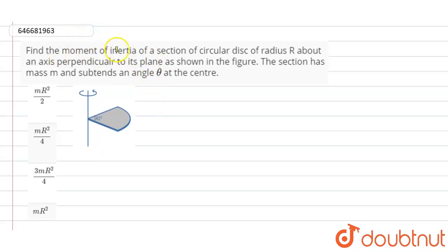It is given that find the moment of inertia of a section of circular disc of radius capital R about an axis perpendicular to its plane as shown in this figure. The section has mass m and subtends an angle theta at the center.